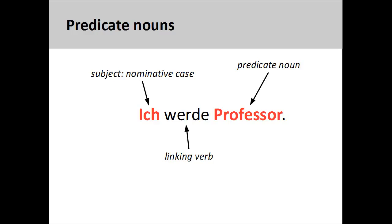It is important to note that other verbs besides forms of 'sein' — to be — can also function as a linking verb. In the sentence 'ich werde Professor' — I become a Professor — the verb 'werde' simply reports on the subject's change of being. Since no real action is described in the sentence, both subject and predicate are in the nominative case.